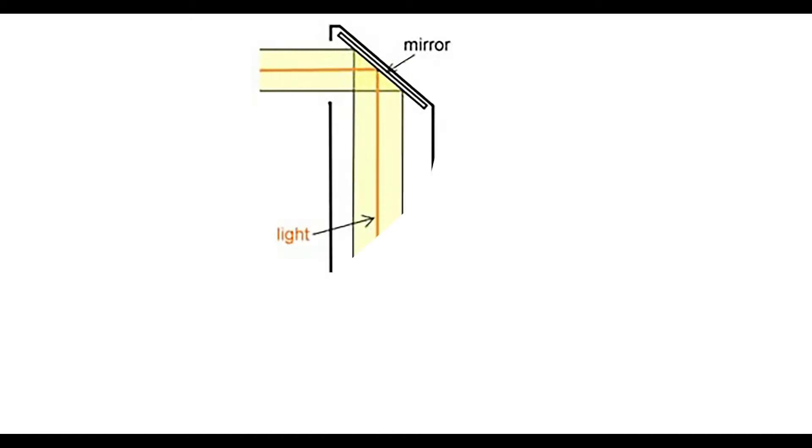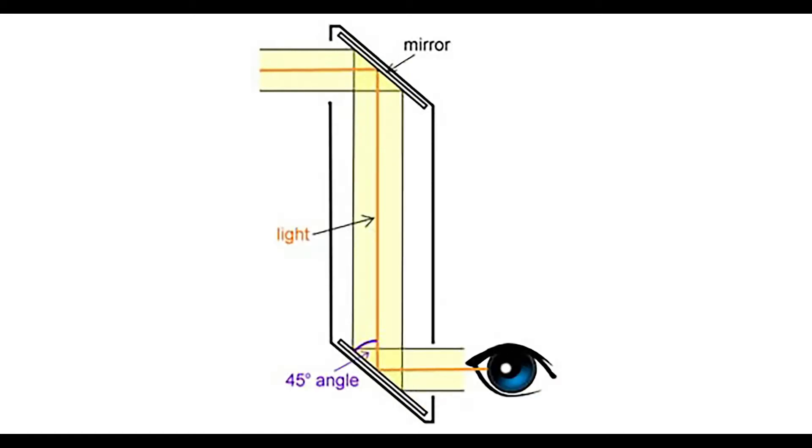That's because light travels very fast — approximately 186,000 miles per second. When that light is bouncing off of an object, it is being reflected to the periscope, where it is again reflected off of a series of mirrors that are at a 45-degree angle and into the observer's eyes.